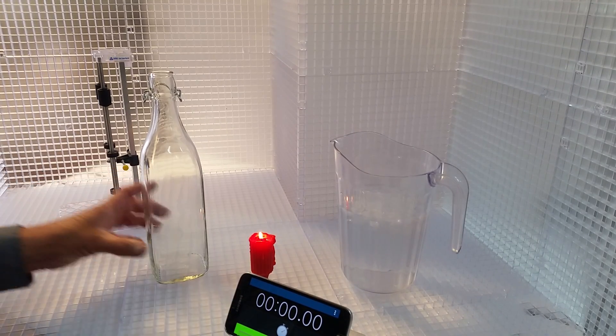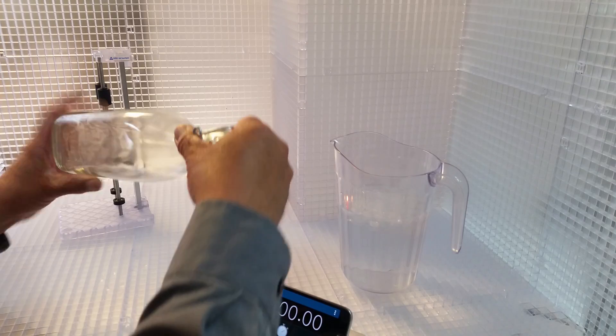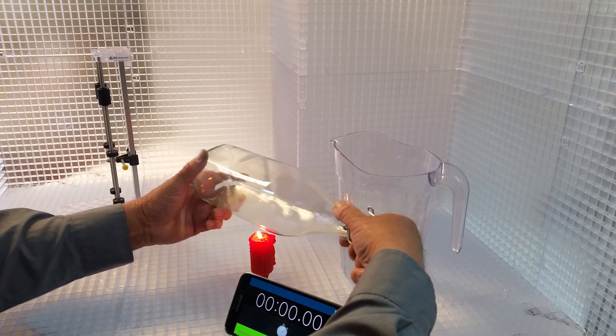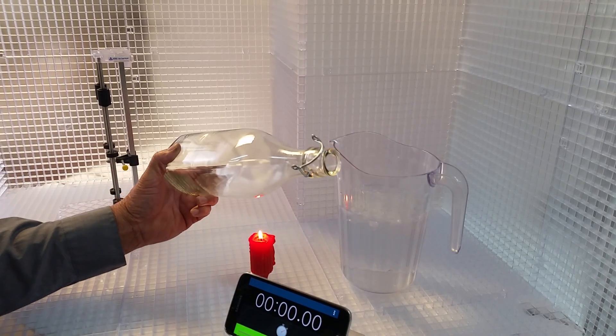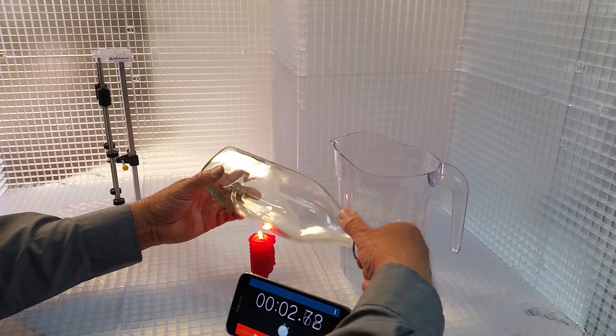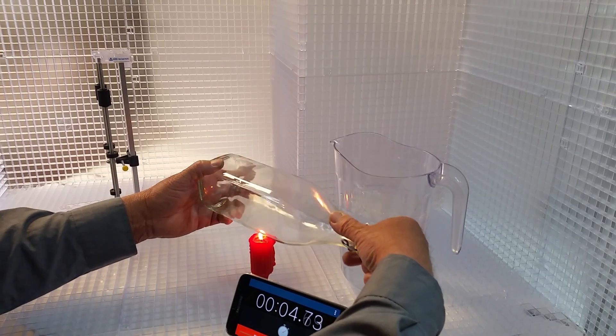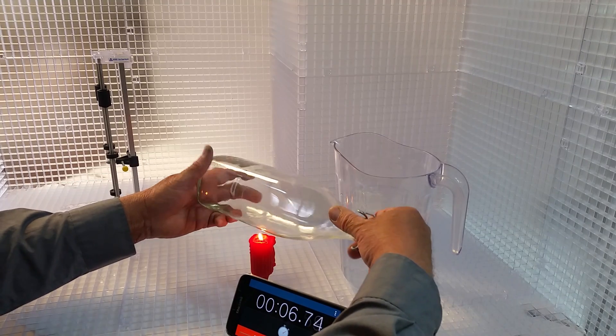We're going to rotate the bottle on the flame for about three minutes and twenty seconds. So let's start our stopwatch. Okay so now we start rolling. Keep the flame about a quarter inch away from the tip of the candle.